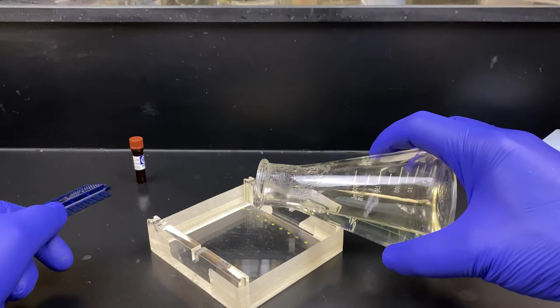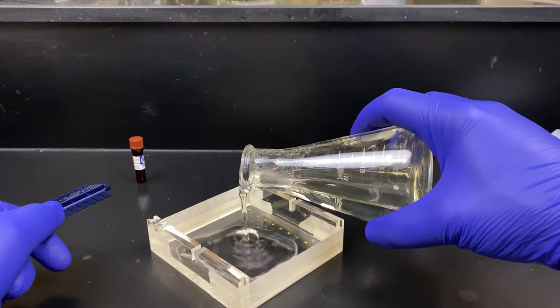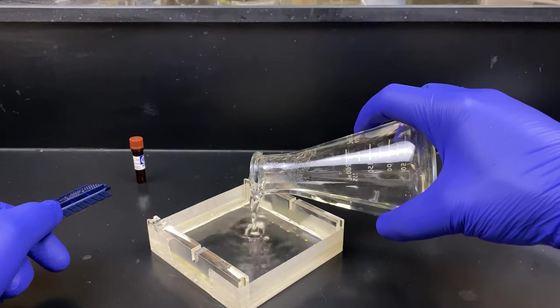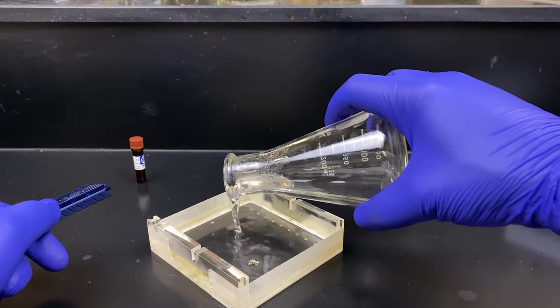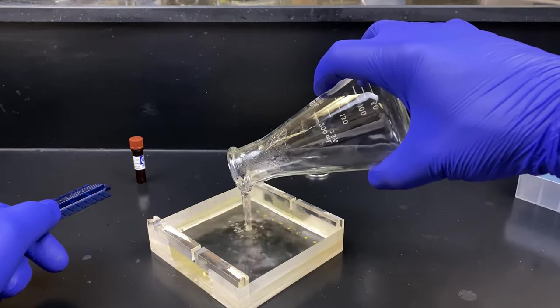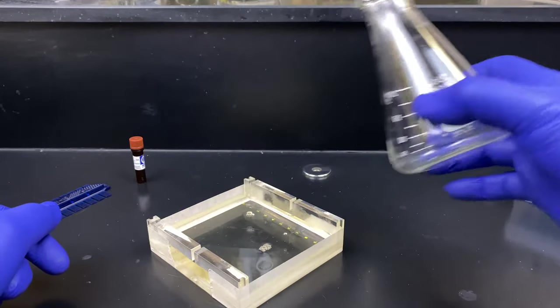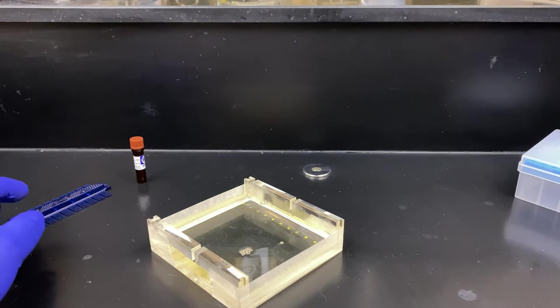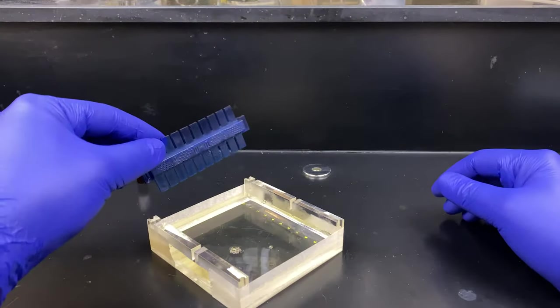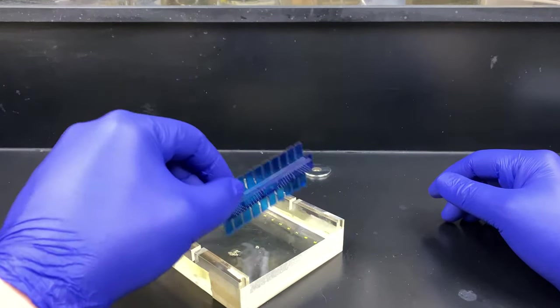Here we pour the gel. We're going to pour the entire contents into this casting tray. There are some bubbles coming out. Don't worry about that. I got a tip for you later on. Sometimes we can use the comb to try and push those bubbles down to the end. If they're at the end touching the masking tape, it's not a big deal.